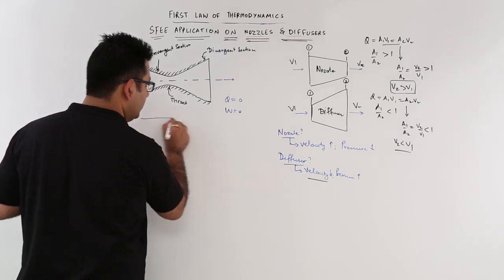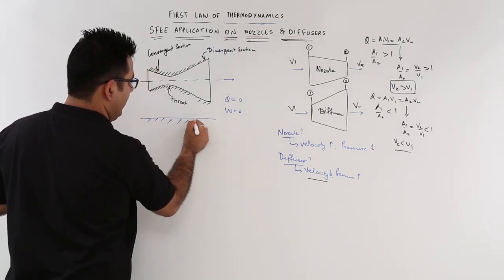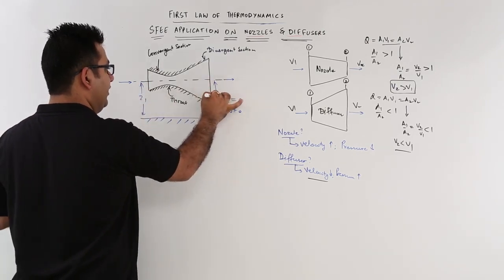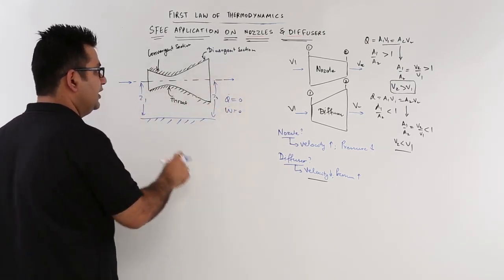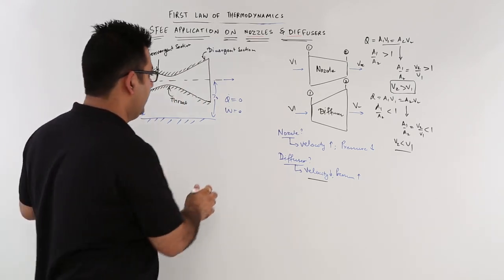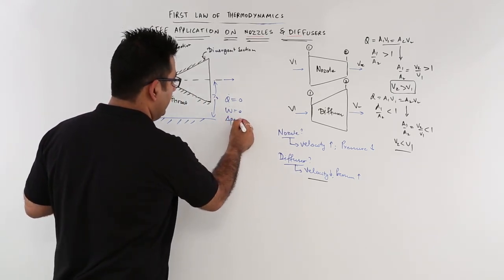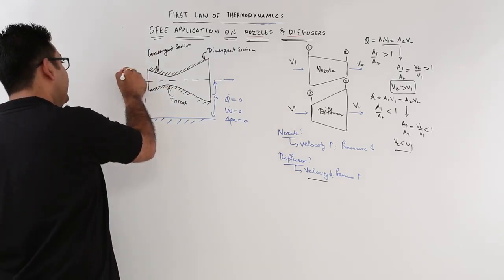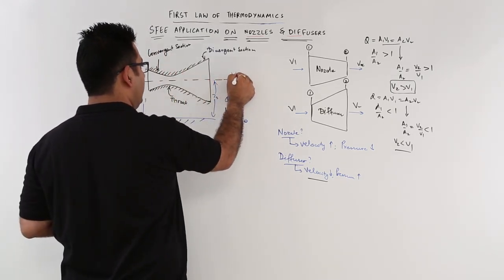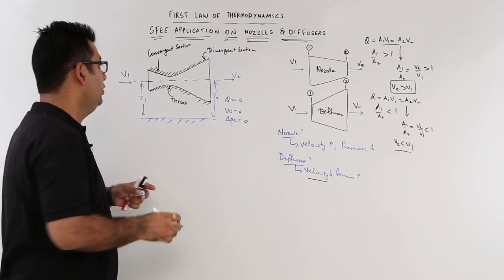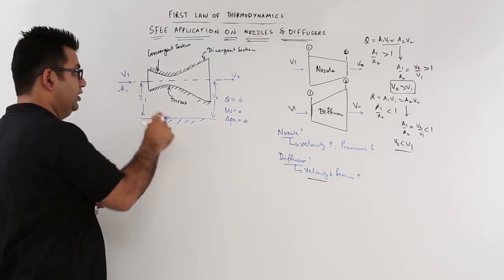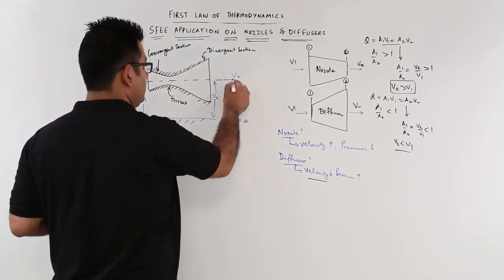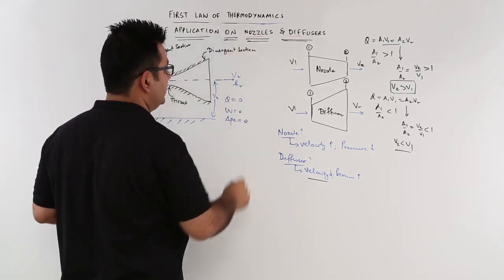Now, if I take this as my reference plane, the entry level and the exit level of the fluid is at the same level. So the potential energy difference is also zero. You are entering at velocity v1 and going out at velocity v2. The steam enters at certain enthalpy and it exits at certain enthalpy. So these two things are different.